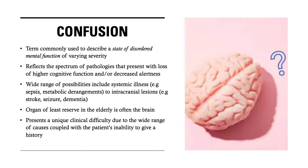Some of the common terms that you might have already heard in your medical journey — confusion, delirium, drowsiness — they are some of the common descriptors of an altered mental state. These terms are commonly used to describe a state of disordered mental function and it covers a spectrum of severity. Confusion can be quite challenging to approach as a junior doctor, as it can reflect a wide spectrum of pathological conditions that may present with a loss of higher cognitive function or decreased alertness.